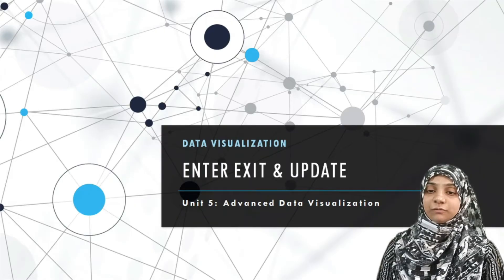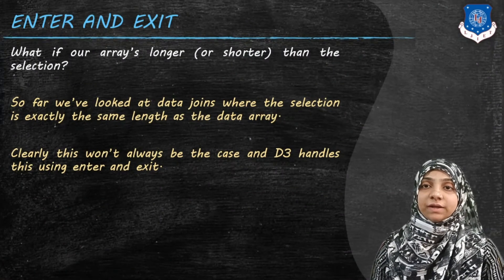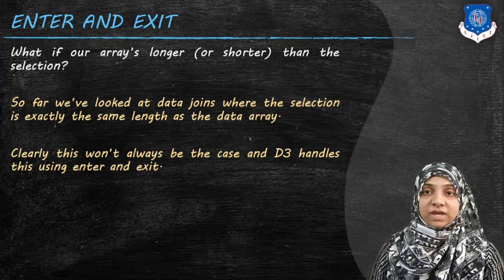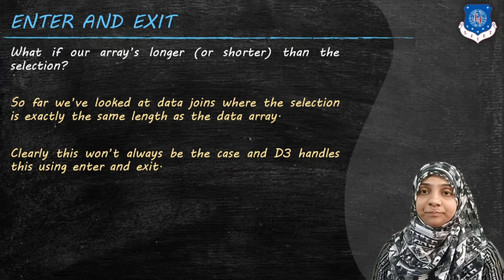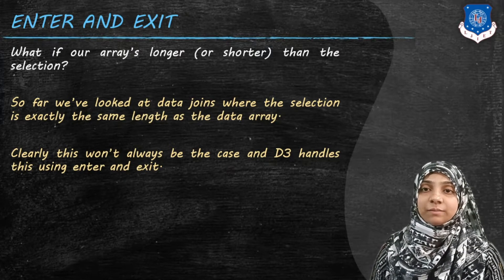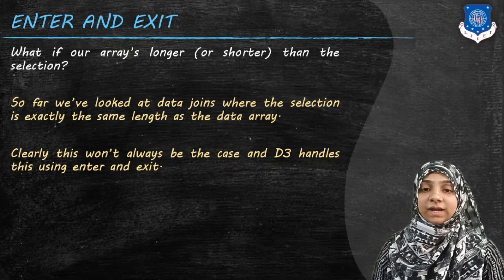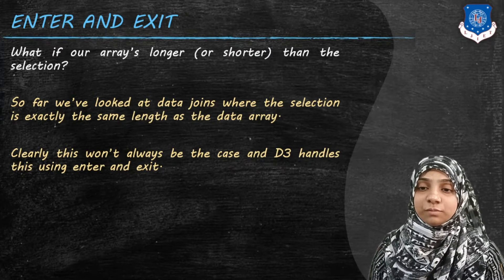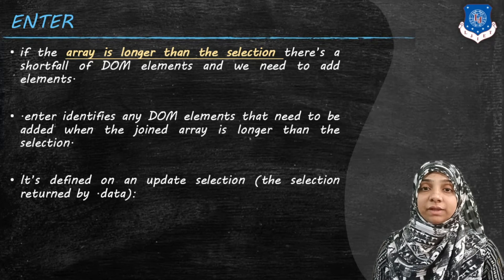In today's video we are going to study enter, exit, and updating — what are the enter and exit methods and when we use them. Consider a case when our array is longer than the number of elements present on an SVG or HTML page, or say DOM elements. Or consider the opposite: array elements are fewer in number compared to DOM elements. In that case, whatever data we have joined with the DOM data would be mismatched in number.